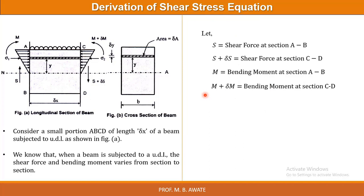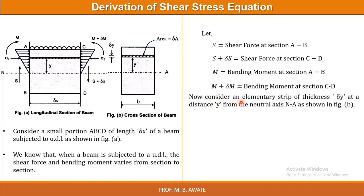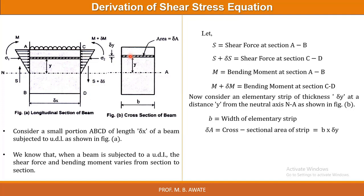We are considering an elementary strip of thickness delta y at a distance y from the neutral axis. This is an elementary strip having thickness delta y, at a distance y from the neutral axis. B is the width of the elementary strip. Delta A is the cross-sectional area of the strip, which equals B into delta y.